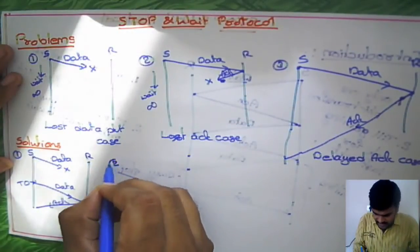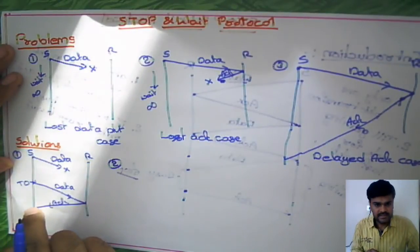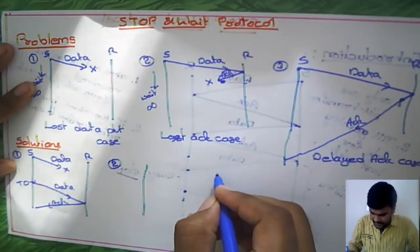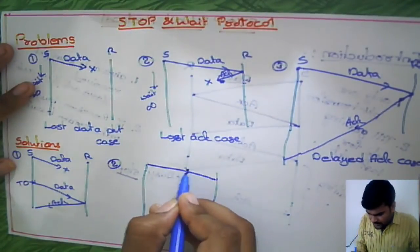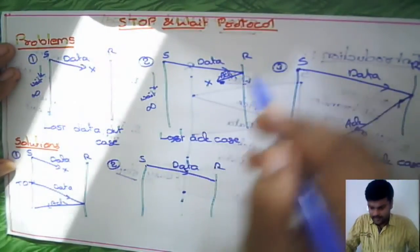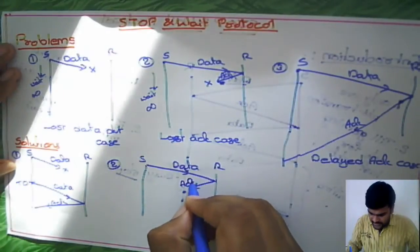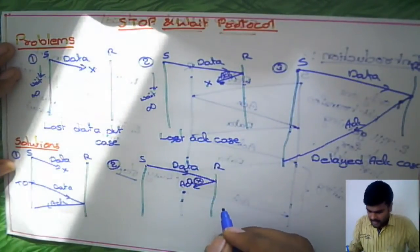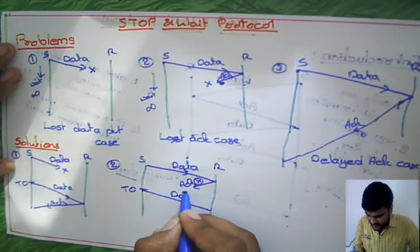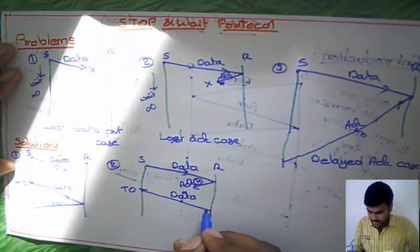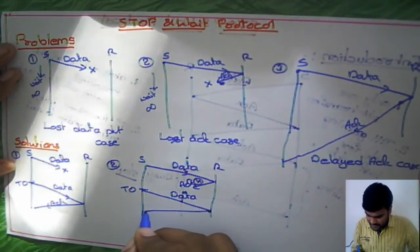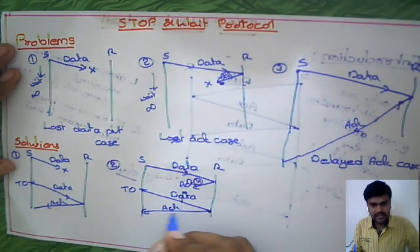Now moving to the second problem: with this timeout concept, how are we going to solve the lost acknowledgement case? Assume you send the first data packet and it is received safely, but then the acknowledgement is lost. After timeout, the sender retransmits the data packet and the receiver gives acknowledgement again, which is now received properly.